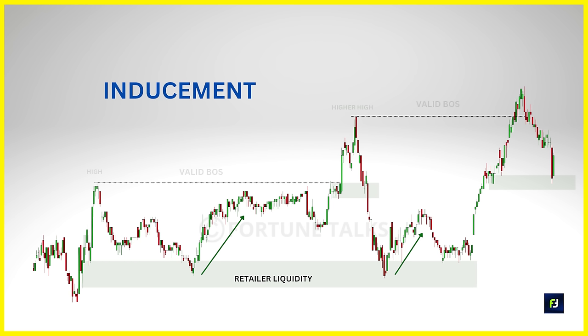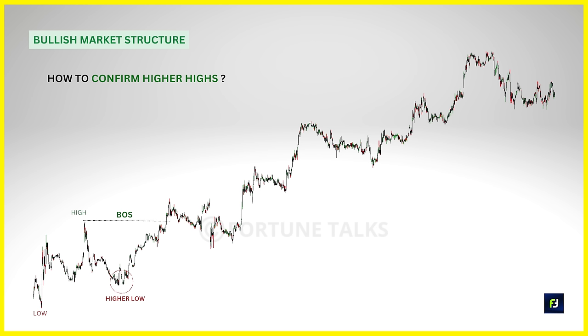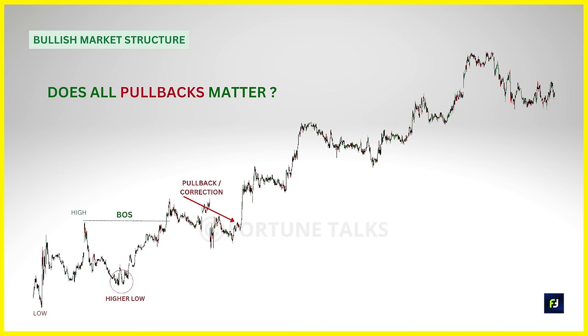This concept is called an inducement, which is a very important topic in SMC and will be discussed in upcoming episodes. For now, let us understand how a higher high of a major bullish structure gets formed using pullbacks. The price breaks the previous high and moves higher, but it cannot go higher indefinitely — at some point it has to come down, which we call a corrective move. So a bullish market structure is a combination of bullish impulse moves and corrective pullbacks.